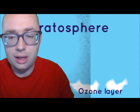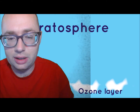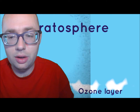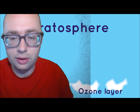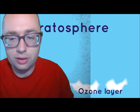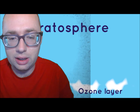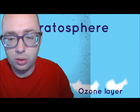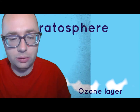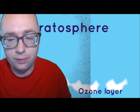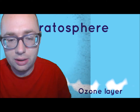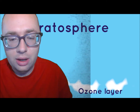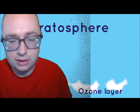The stratosphere extends for the next 32 miles after the troposphere. The ozone layer is in the stratosphere. Unlike the troposphere, the stratosphere gets its heat from the ozone layer absorbing radiation from the sun. As a result, it gets warmer the further away you get from the Earth. There is little water vapor and other substances in this layer.